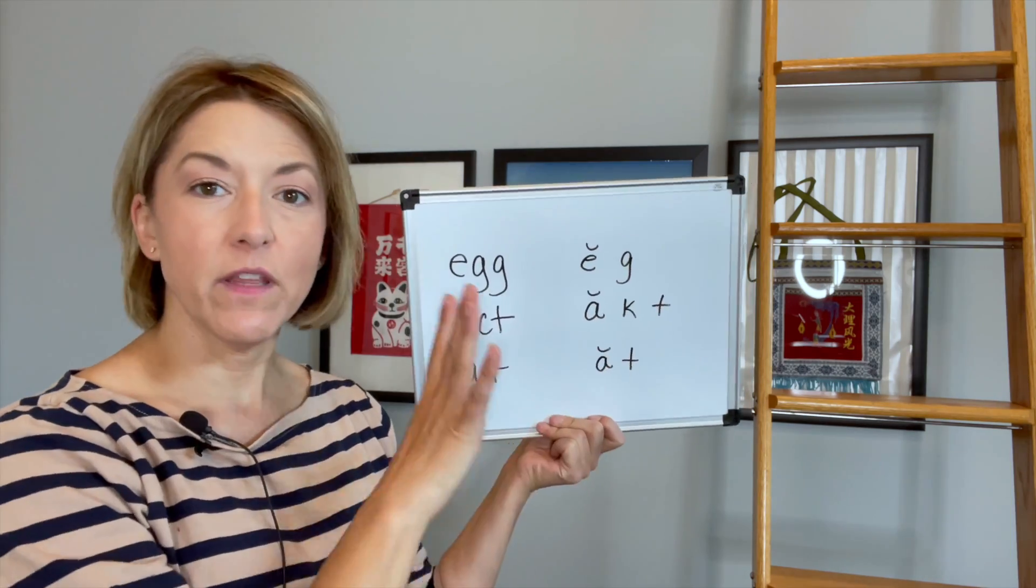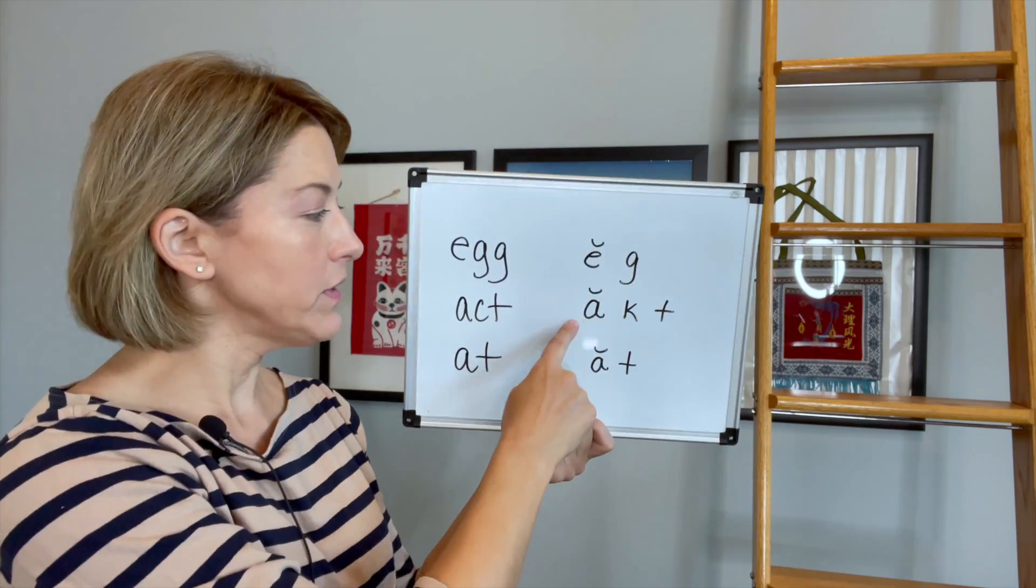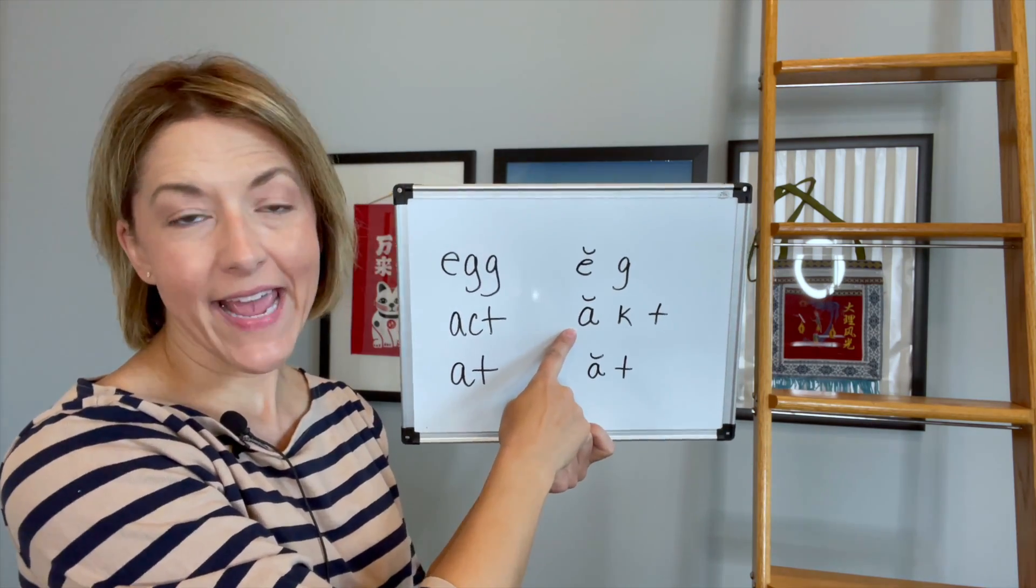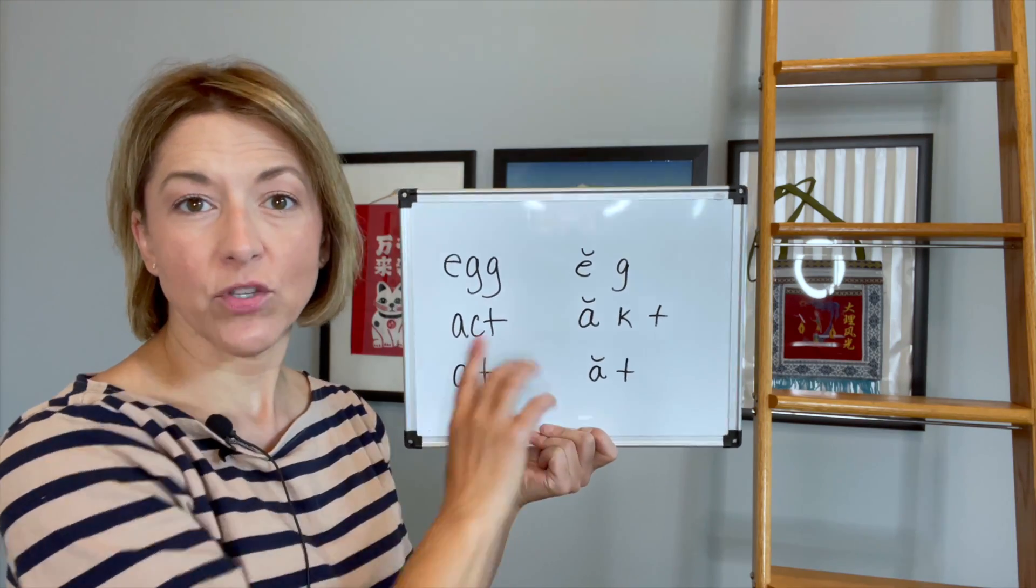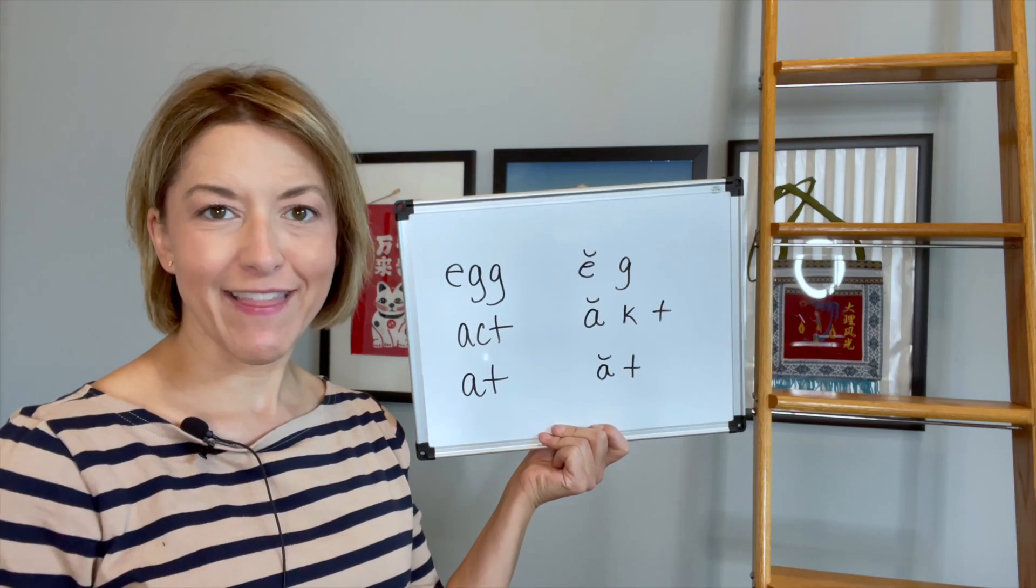The difference between these words that we're going to be focusing on today is this e, the short e, is a little more closed and the short a is more open. So if you think about those two things, I think that's really going to help you differentiate these vowels.